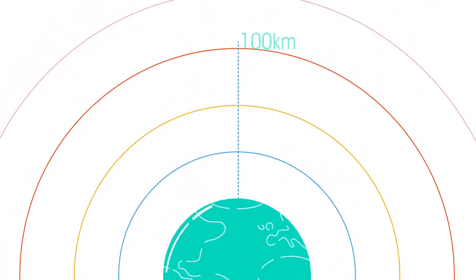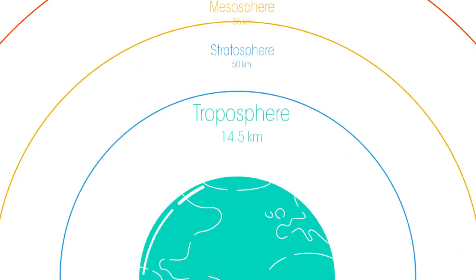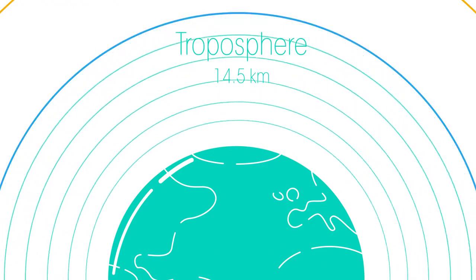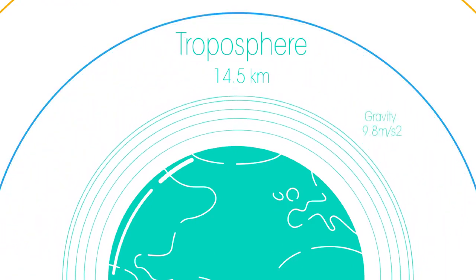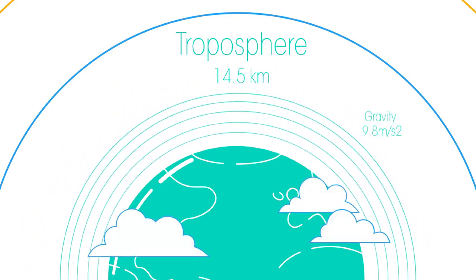The atmosphere is about a hundred kilometers thick and is broken down into different layers. It starts with the troposphere closest to the Earth, which extends to 14.5 kilometers. Thanks to gravity, this is the most dense part and is where the clouds are found. Nearly all of our weather happens in here.